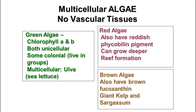There are three main groups of multicellular algae: the green algae, the red algae, and the brown algae. They all have chlorophyll, necessary for photosynthesis, as well as some other pigments. In the green algae, you have both unicellular and multicellular algae, and some are colonial like volvox. The multicellular ones include green seaweed like ulva, which is called sea lettuce.